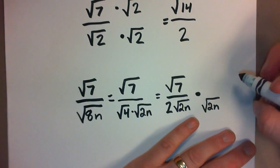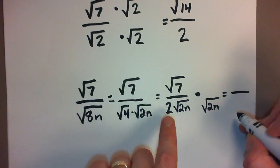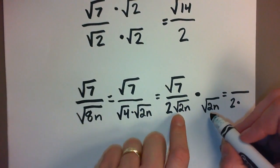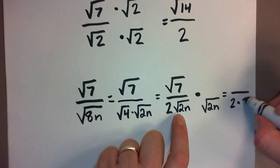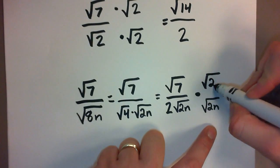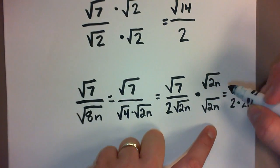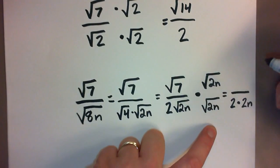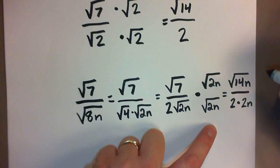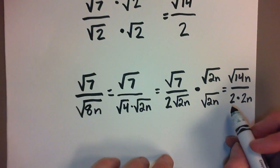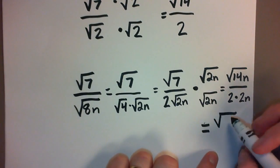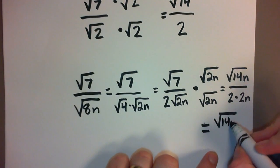Then when I do that, I'm going to have this: 2 times the square root of 2n times the square root of 2n is just 2n. On top we have to multiply by the same thing, by the square root of 2n. So on top, the square root of 7 times the square root of 2n is the square root of 14n, because you just multiply the 7 and the 2n.